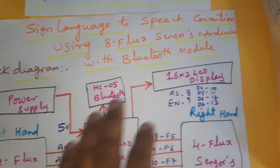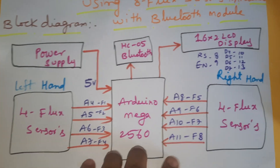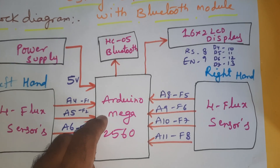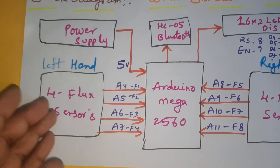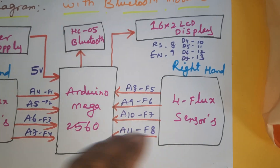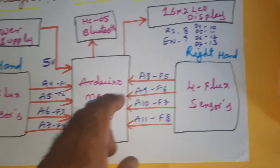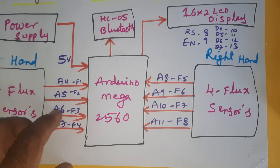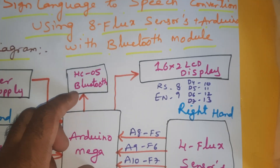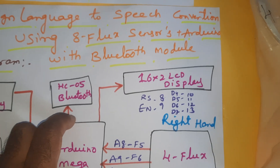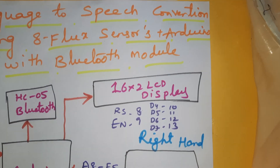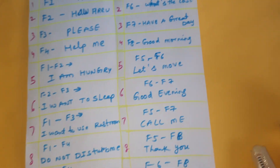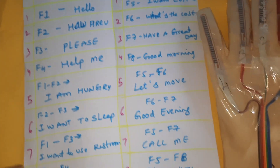Sign language to speech conversion using 8 flex sensors and Arduino with Bluetooth module HC05. We are using a 5V power supply to the Arduino Mega 2560 board. Left hand 4 flex sensors and right hand 4 flex sensors are connected to ADC pins A4, A5, A6, A7, A8, A9, A10, A11. The HC05 Bluetooth module is connected to serial communication pin 3, and the 16x2 LCD display is connected to RS, Enable, D4, D5, D6, D7, pins 8 through 13.